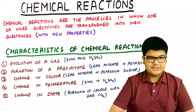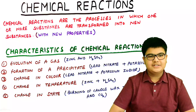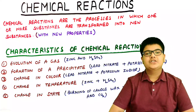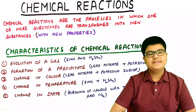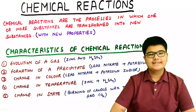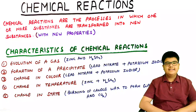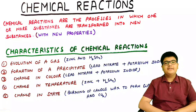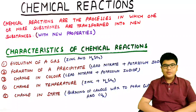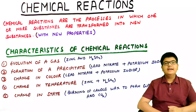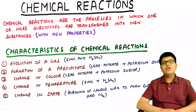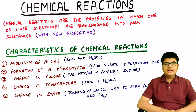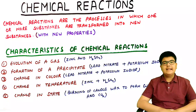What are chemical reactions? Chemical reactions are the processes in which one or more substances are transformed into new substances with new properties. Now let us discuss the characteristics of a chemical reaction. The following things can be observed in a chemical reaction. First, evolution of a gas — in a chemical reaction, a gas can be formed.